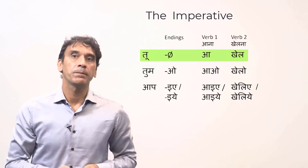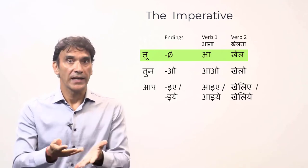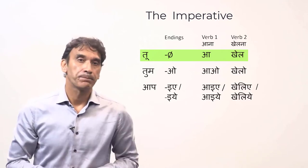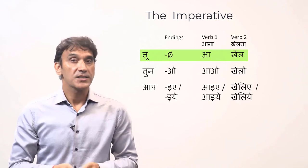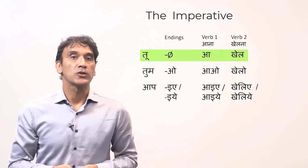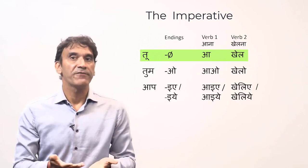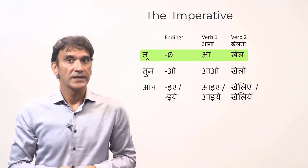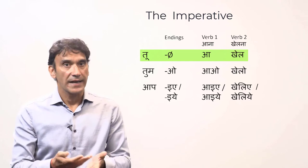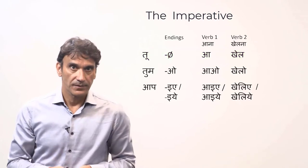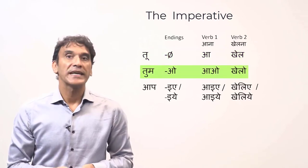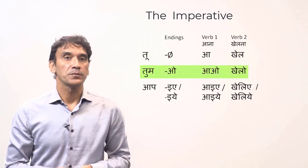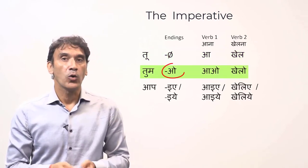For 'aana' it is 'aa' (come), and for 'khelna' it is 'khel' (play). So: 'tu aa' — you come; 'tu khel' — you play. I want to remind you that 'tu' is extremely informal and can be taken as a rude comment, so please avoid it.